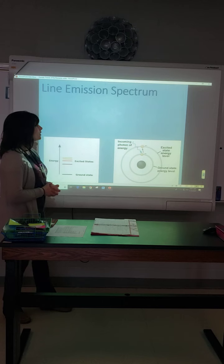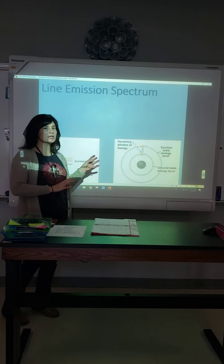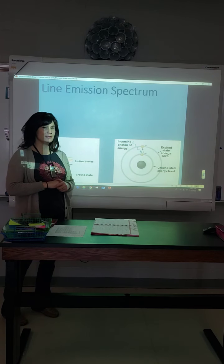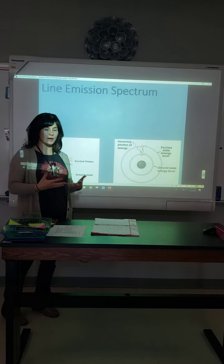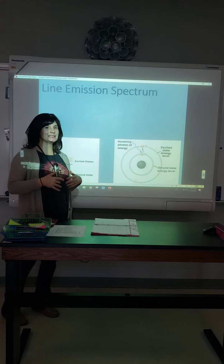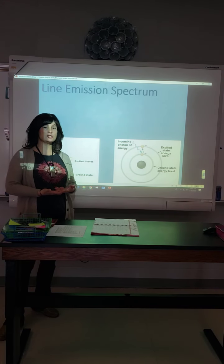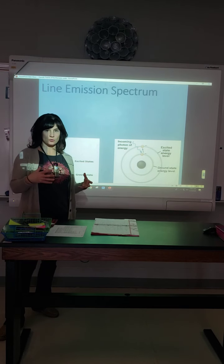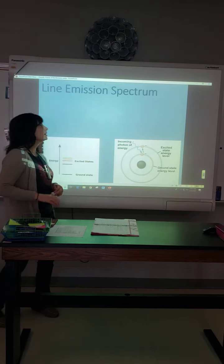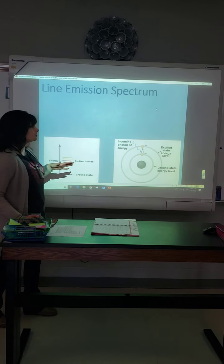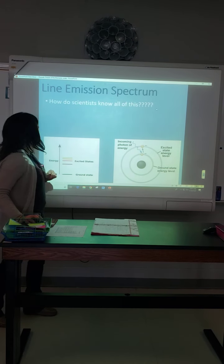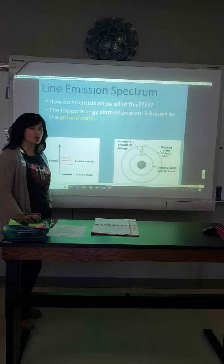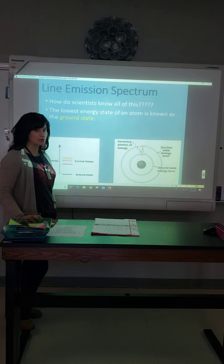We're going to look at something real quick — I don't want you to get too distracted or hung up on this idea. This is called the line emission spectrum, and this is how we kind of know what's going on with things. This is extra information, just like the history of the atom was extra, just to give you the whole story. Scientists know all of this because the lowest energy state of an atom is called the ground state.